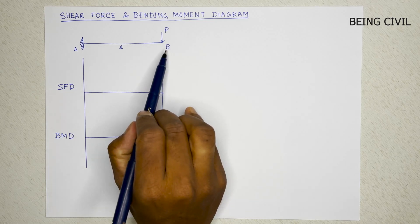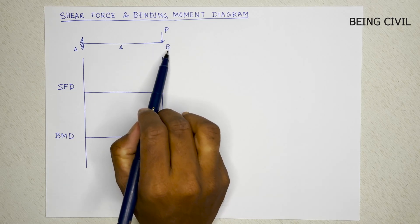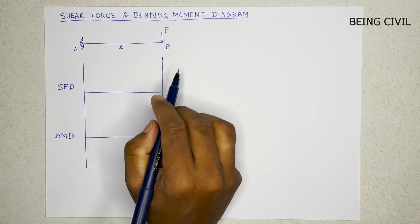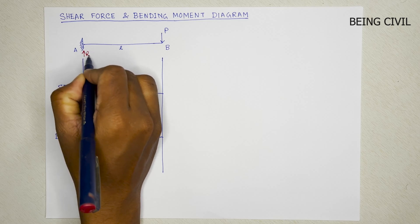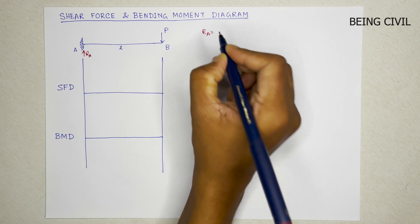So AB is our cantilever beam of length L and the point load P is applied at the free end B. We'll first calculate the reaction force. So at this fixed end, the reaction force RA will be nothing but the total applied load which is P.